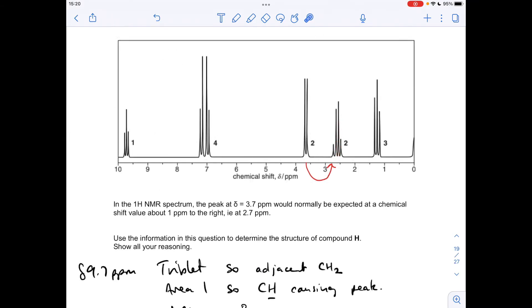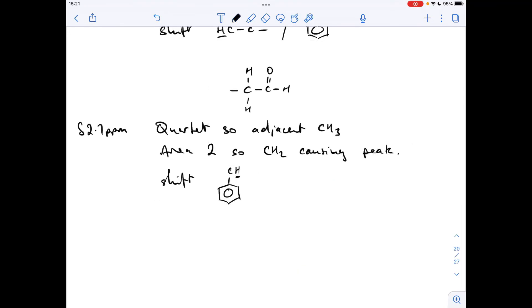Okay, so we'll move on to this signal now, so this is at around about 2.7 ppm, so it's a quartet, so there's an adjacent CH3 group. The area of 2 is telling us that a CH2 group is causing the peak, and the shift value is indicative of a hydrogen bonded to a carbon bonded to a benzene ring. It could also be the H to C to C double bond O, but we've already got protons in that environment, so we're going to go for the other option.